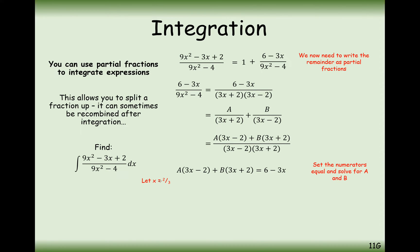We're going to substitute in strategic values of x to make one of the brackets equal 0. If we set x equal to 2/3, we set the first bracket equal to 0. Substituting in the values gives 4B equals 4, so B must equal 1. For the second bracket, x must equal minus 2/3.